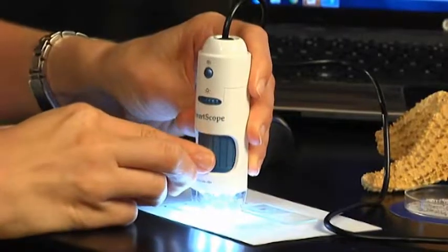And then you can continue to turn the dial to the left. And right there, we have 200X magnification. You can even see the tiny little hairs on the bee wing.